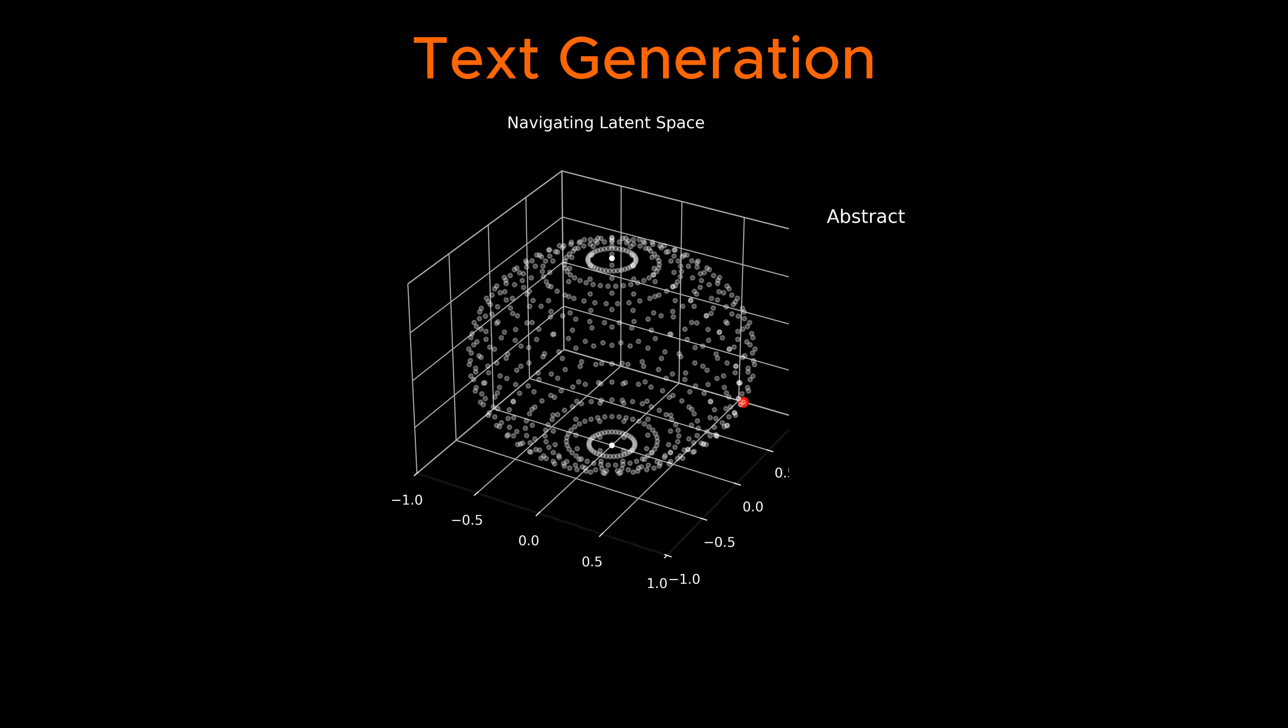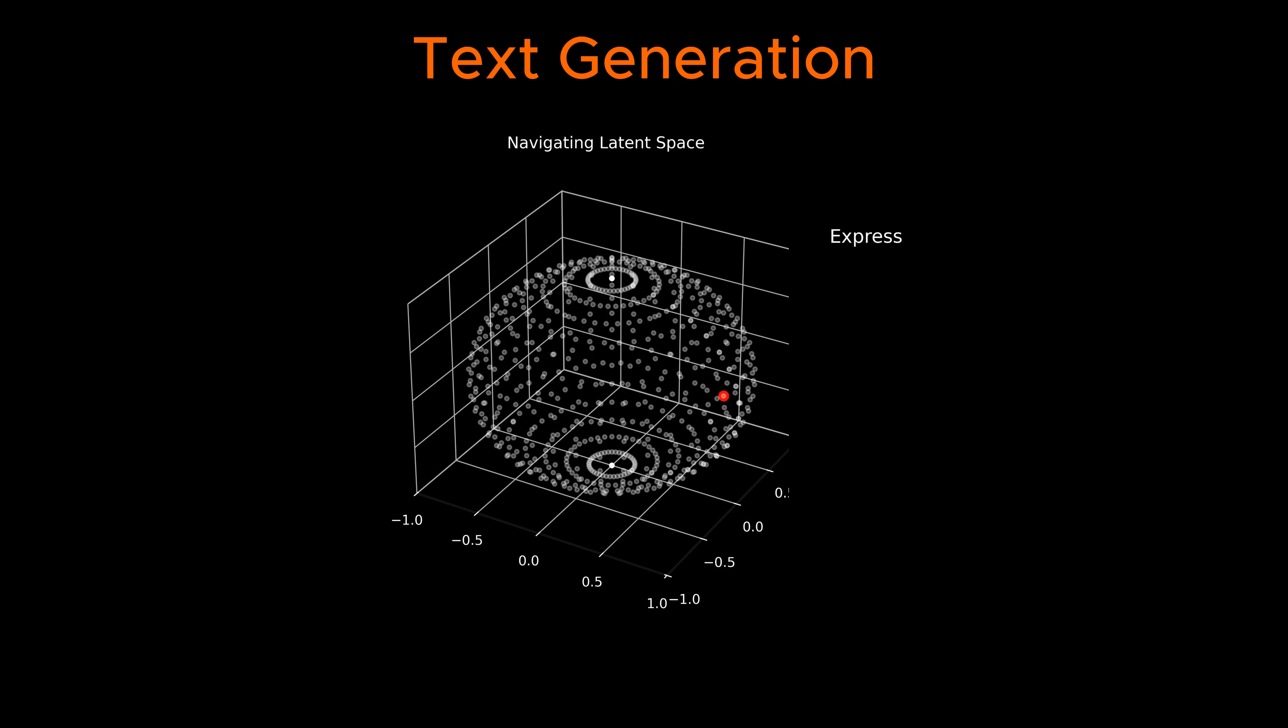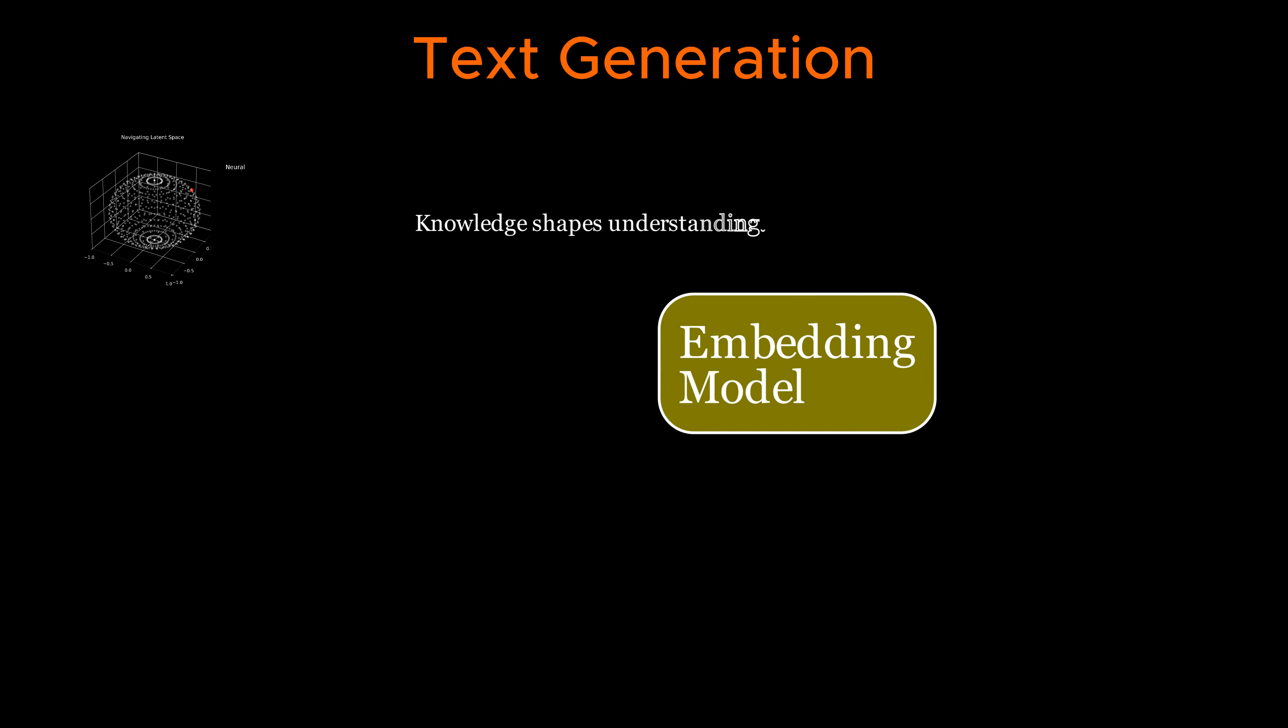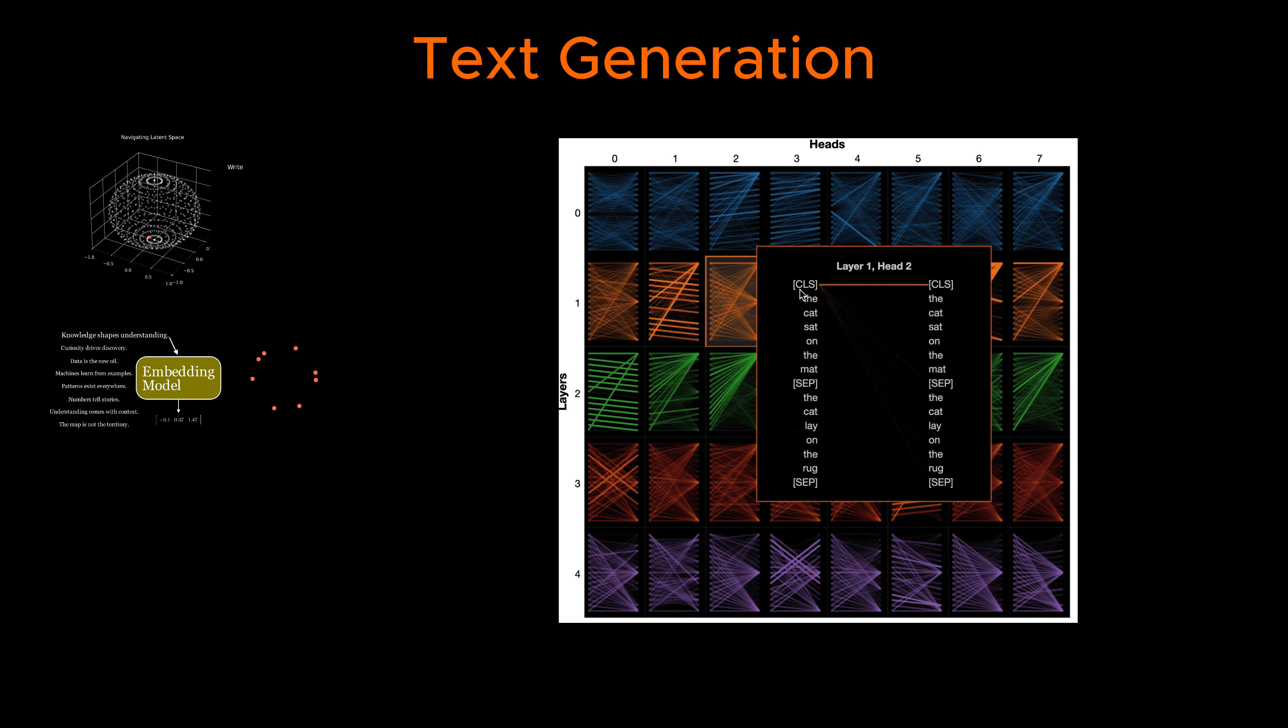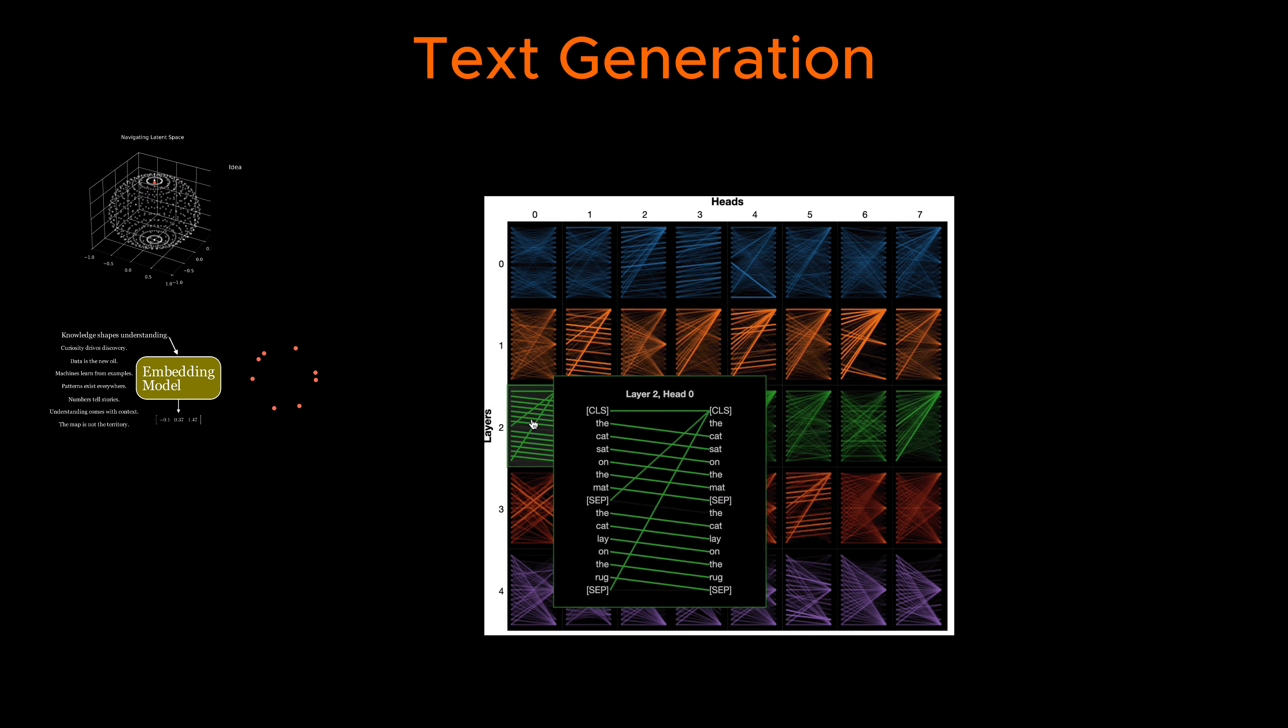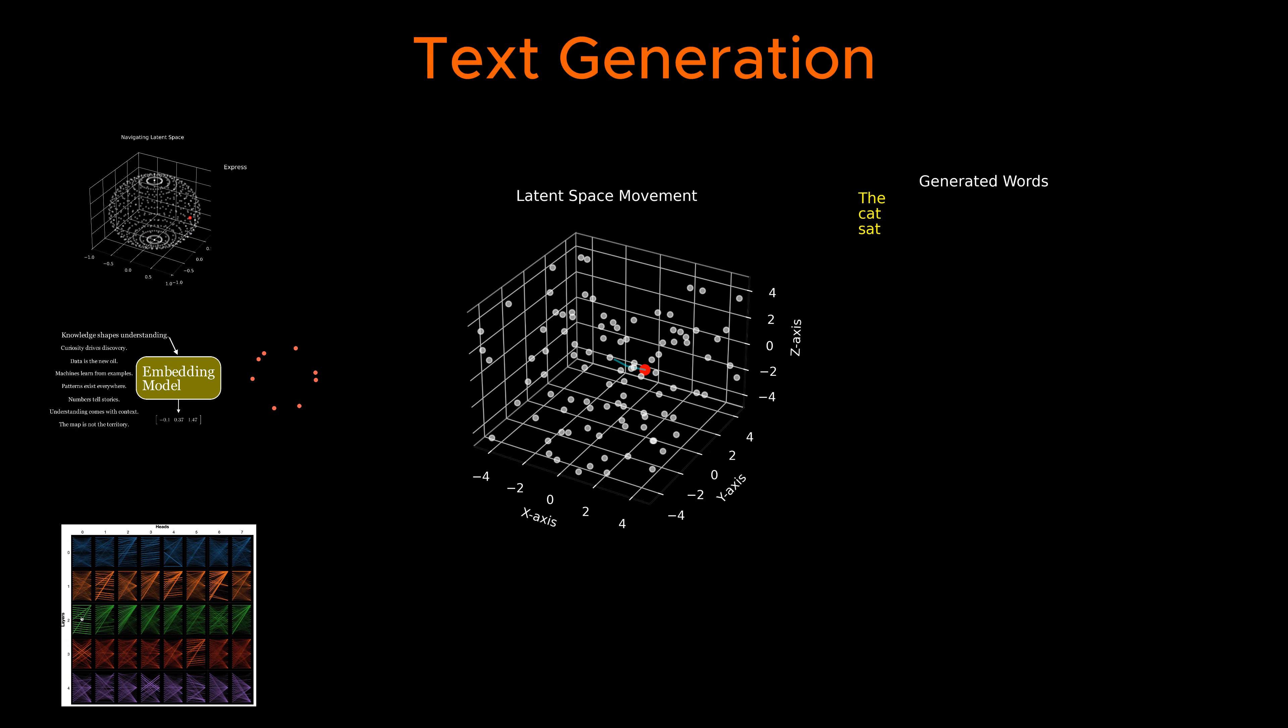Once this latent space is established, text generation becomes a process of navigating it. When given a prompt, the model converts it into an embedding, which acts as a starting point in the latent space. Using attention mechanisms and deep network layers, the model explores nearby regions, predicting the most probable next words by following patterns it has learned. Each word it generates updates the embedding, moving through the latent space in a way that maintains coherence and context.